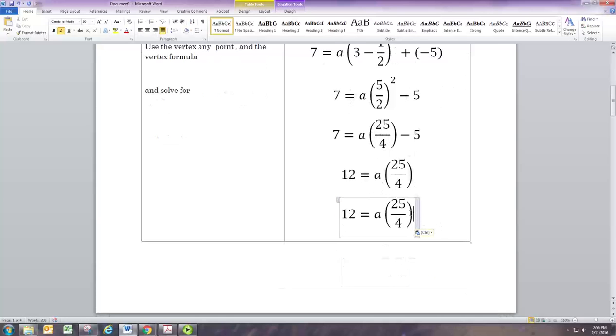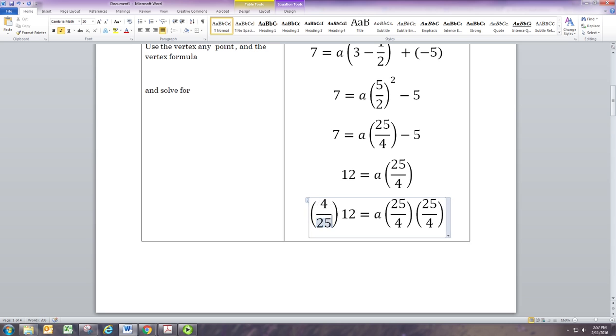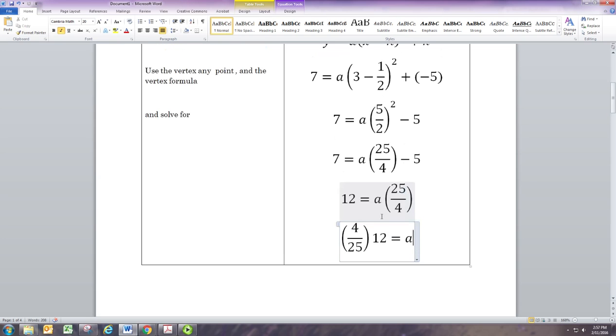To get rid of this 25/4 we need to multiply by the reciprocal on both sides. The reciprocal is 4/25. Now 25/4 times 4/25 is just 1, so that goes away. Multiply to get 12 times 4 is 48 over 25.